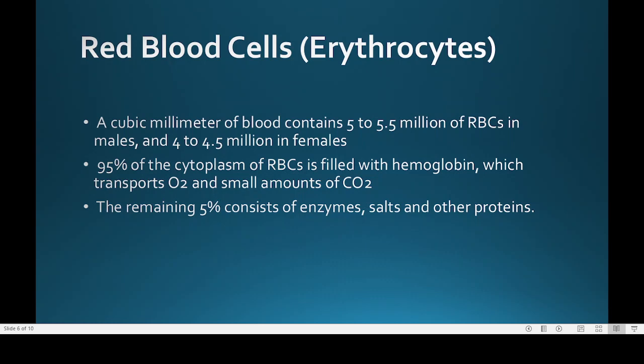Red blood cells are bi-concave and have an elastic cell membrane. They are formed in the liver and spleen in early life, but in adults they are formed in the red bone marrow of the sternum, ribs, and vertebrae. The average life span of red blood cells is 120 days, after which they break down in the liver and spleen by the process of phagocytosis.